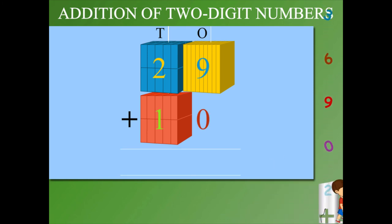On the ones side, 9 plus 0 is 9. And two tens plus one tens is three tens. So you get 39. Good work.